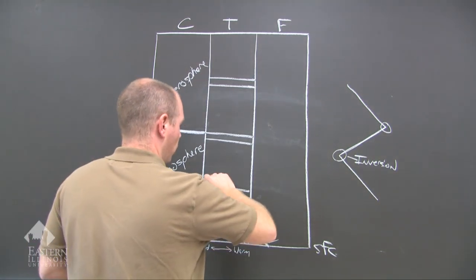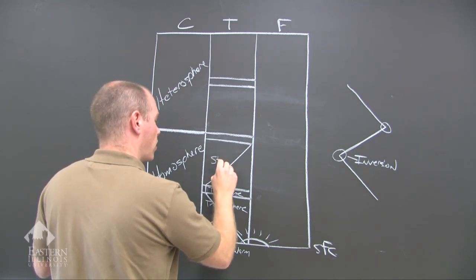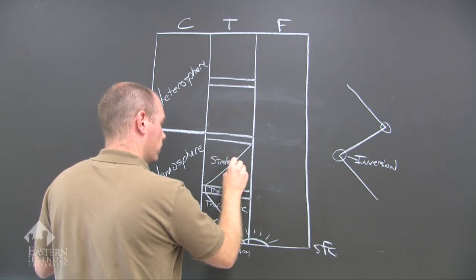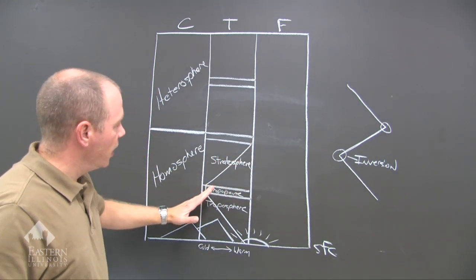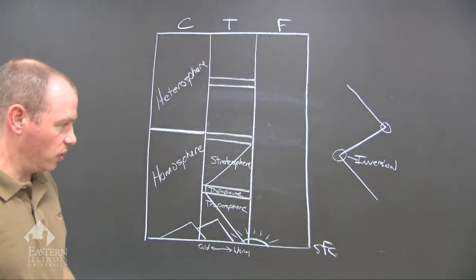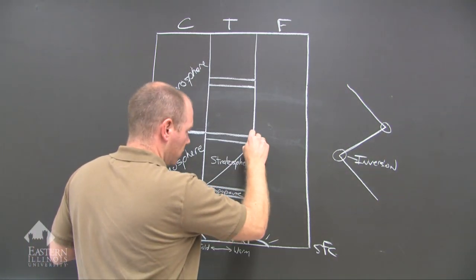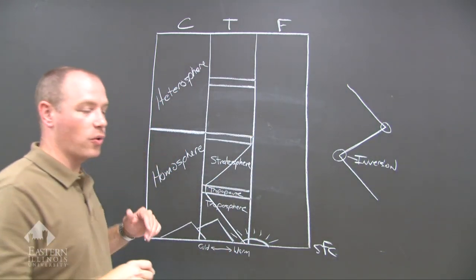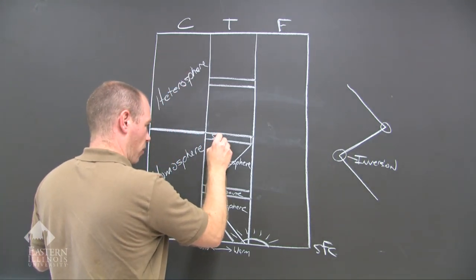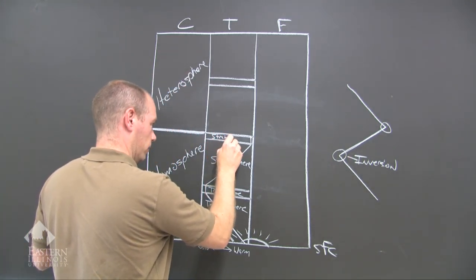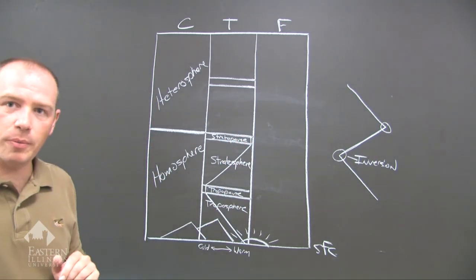Then we increase in temperature, and this is what we call the major shell: the stratosphere, where temperature increases with altitude. It warms back up with altitude. Then temperature doesn't change very much, so it's another pause — another point of inversion — and we call this the stratopause.